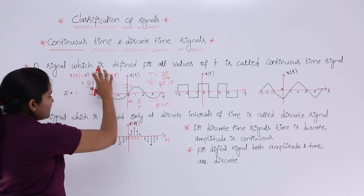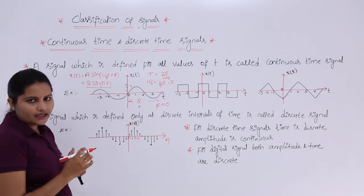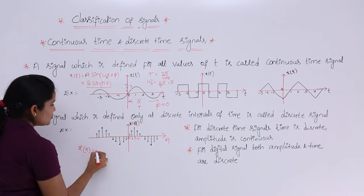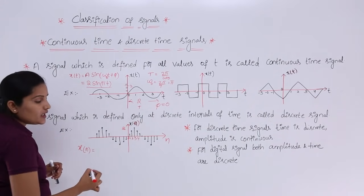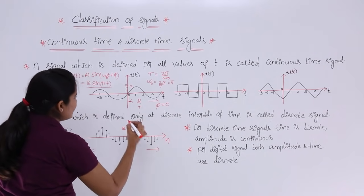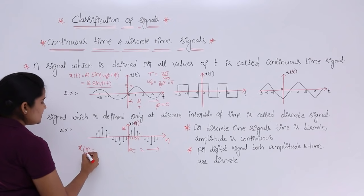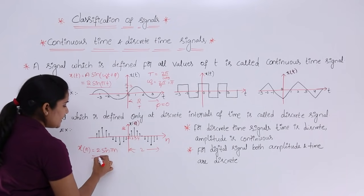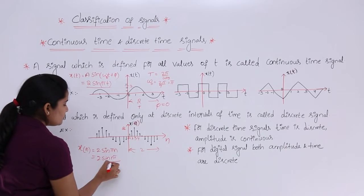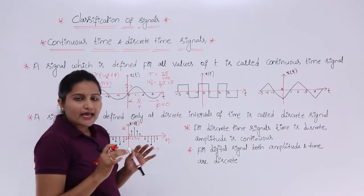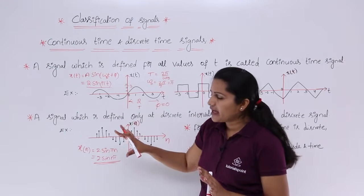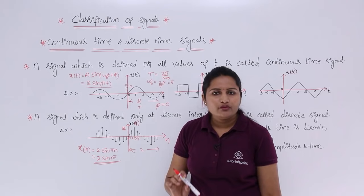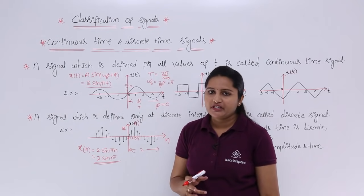The only difference for the discrete version is we can define it only at discrete intervals of time. If you consider the same time period of 2 for the discrete signal, the equation becomes x(n) = 2 sin(πn). When representing a continuous time signal use t; when representing a discrete time signal, use n.